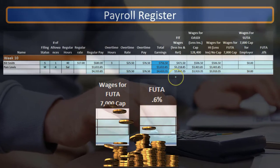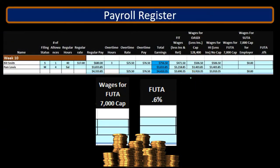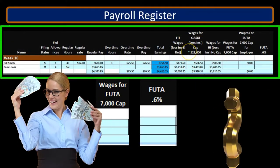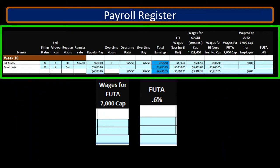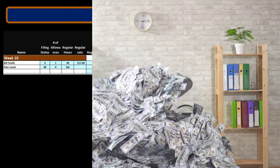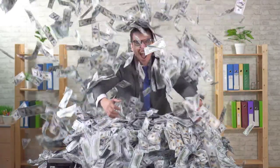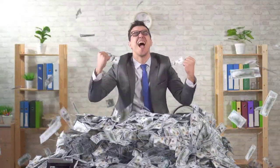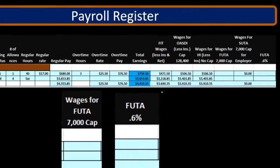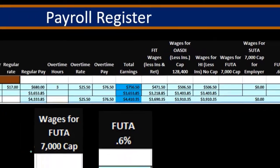For example, the FIT may differ if there's a cafeteria plan. The OASDI, or social security, has a cap on it, so if anybody is over that amount then it will differ from the total earnings. Medicare and social security could also differ if there's something like a cafeteria plan. FIT could differ if there's a retirement plan as well as a cafeteria plan. The FUTA wages will differ when we have the cap of $7,000.